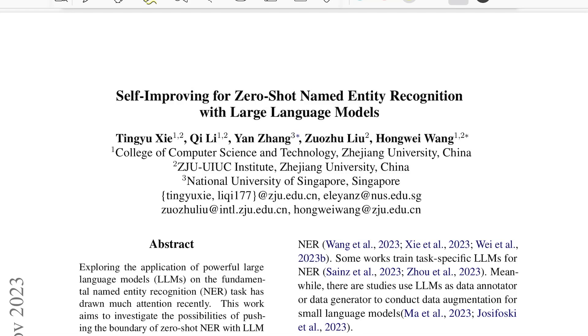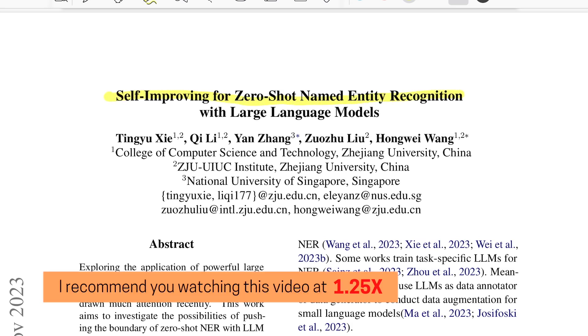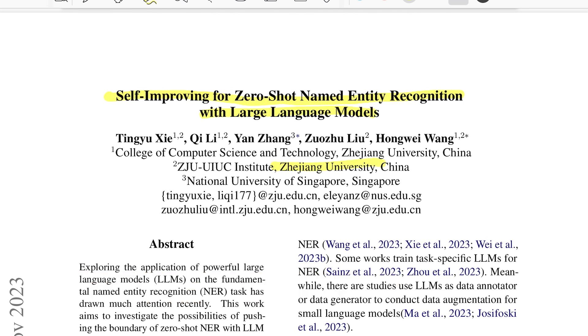Hello there, welcome back to the new video. Today we'll be talking about this paper which is titled Self-Improving for Zero-Shot Named Entity Recognition with Large Language Models. It's from researchers from Zhejiang University and National University of Singapore.